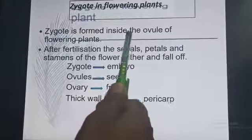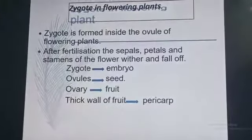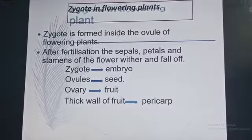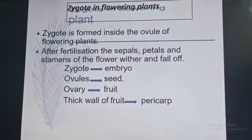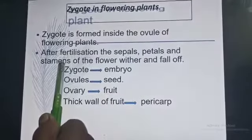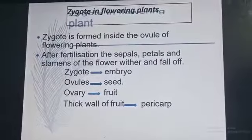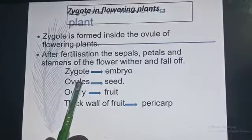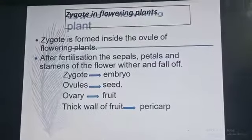Zygote is basically found inside the ovule in flowering plants. After fertilization, the sepals, petals, and stamens of the flower basically fall off. The zygote develops into an embryo, the ovule develops into a seed, and the ovary develops into a fruit.